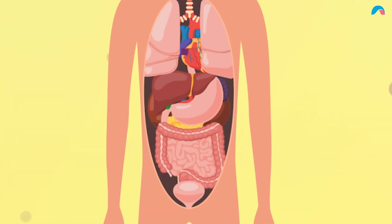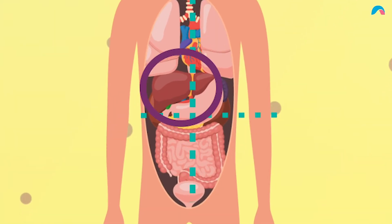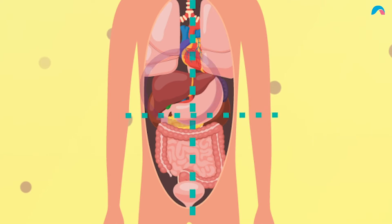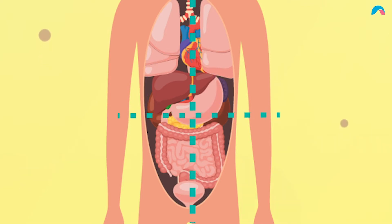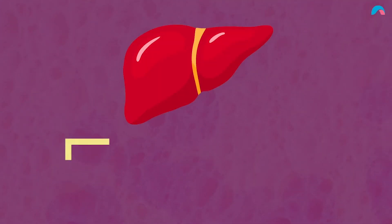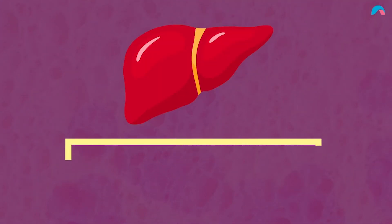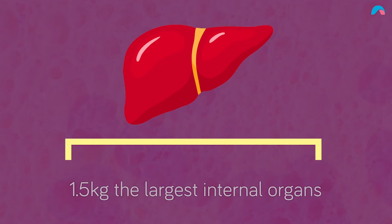The liver sits in the right upper quadrant of the abdominal cavity, resting just below the diaphragm, to the right of the stomach, overlying the gallbladder. The average adult human liver weighs around 1.5 kilograms, making it the largest of our internal organs.